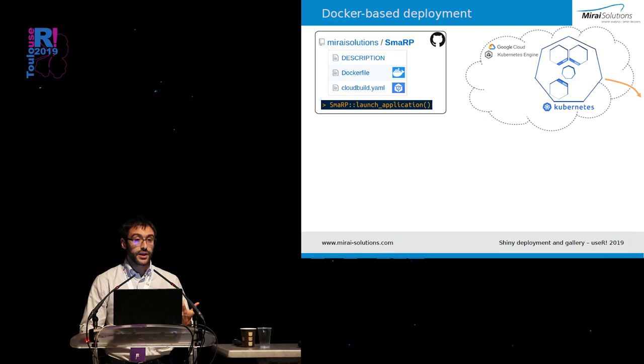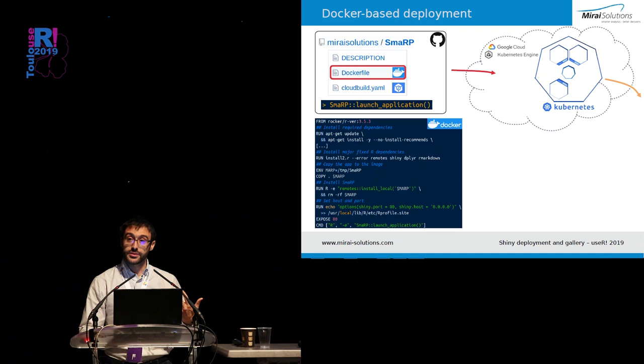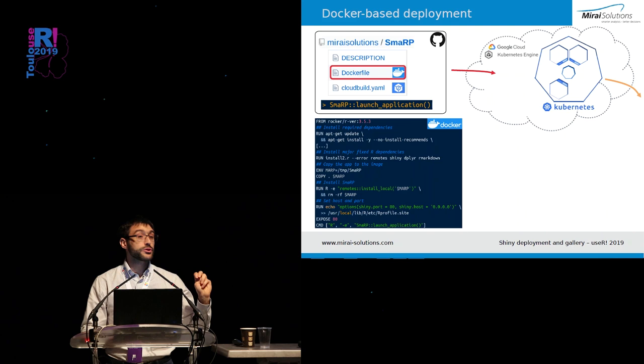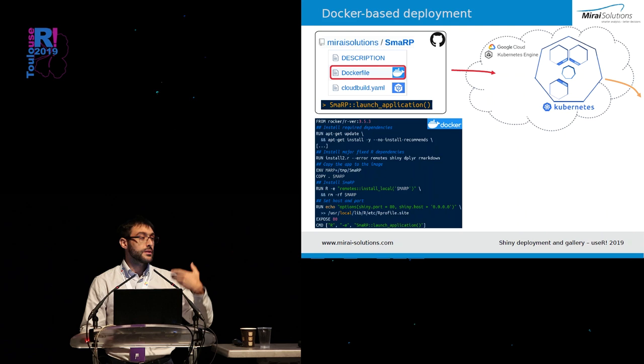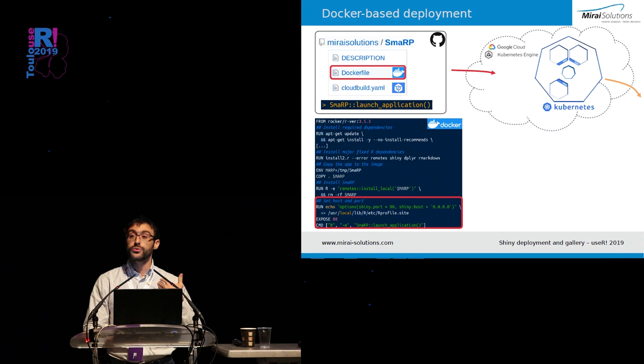This means that you need to package your application as a container using Docker in particular, based on instructions defined in a Dockerfile. This is an extract of the Dockerfile for SMARP. You see that everything starts with a base R image — in this case, a version-stable R image from the great Rocker project. We need to install all the dependencies, both system libraries and package dependencies, install the SMARP package itself, and most importantly, launch the application in a way which is accessible on an exposed port.